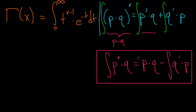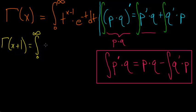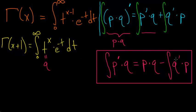Before we use this formula, we need to evaluate gamma when x is equal to x plus 1 — that is, we want to find gamma of x plus 1. This is equal to the integral from 0 to infinity of t to the x plus 1 minus 1, which simplifies to t to the x, multiplied by e to the minus t, dt. We set t to the x equal to q in our formula, since we'll be taking its derivative inside the integral, and we set e to the minus t equal to the derivative of the function p.